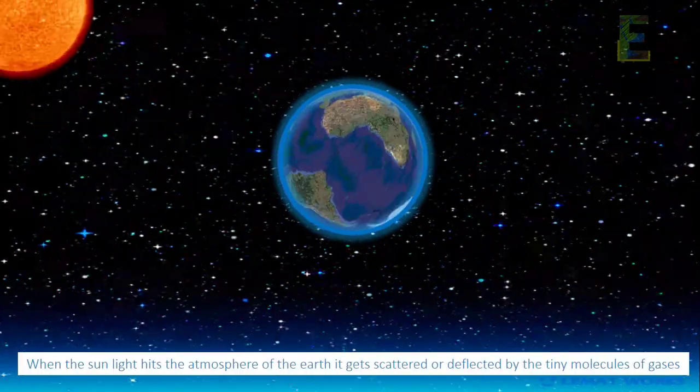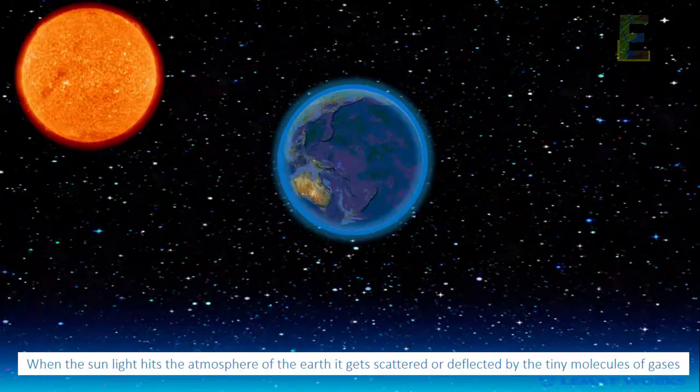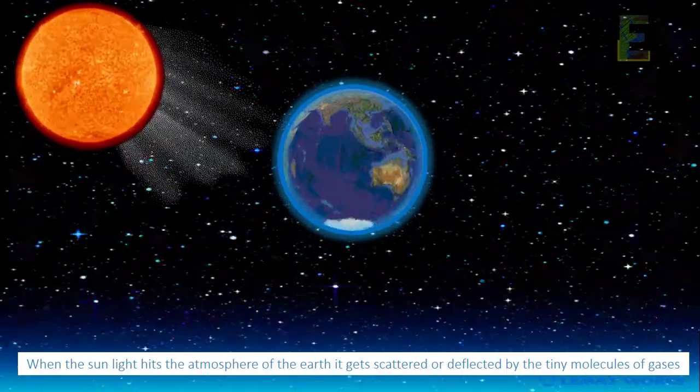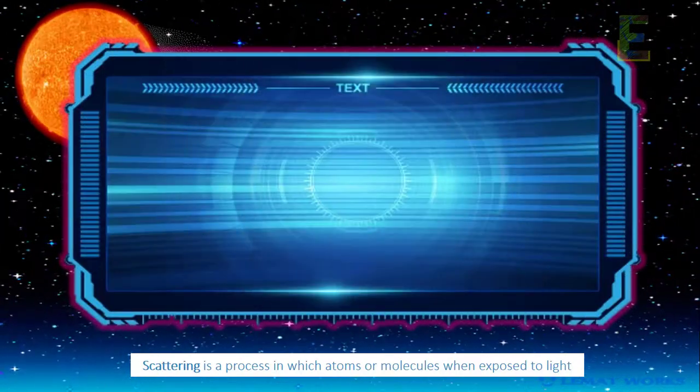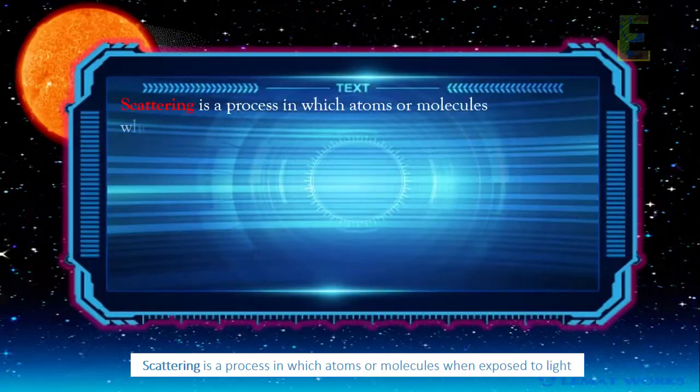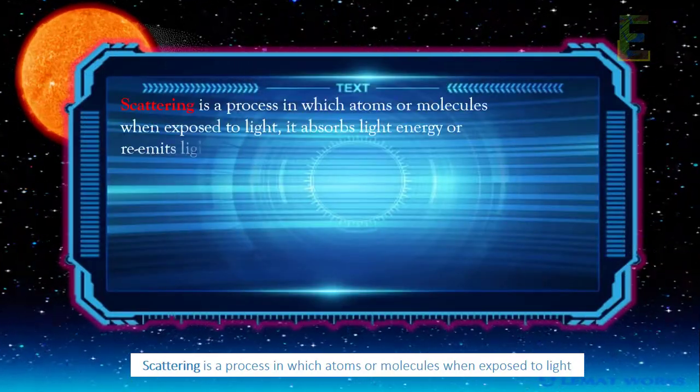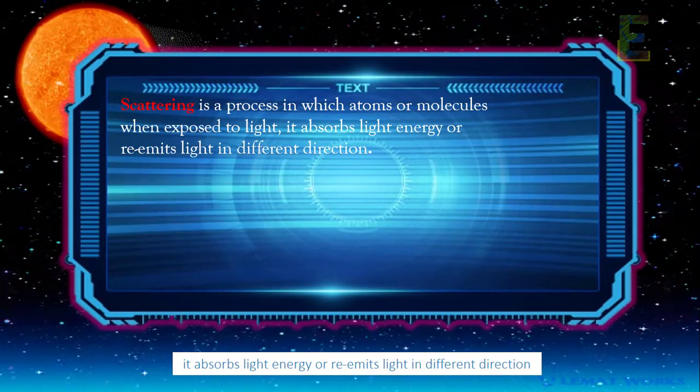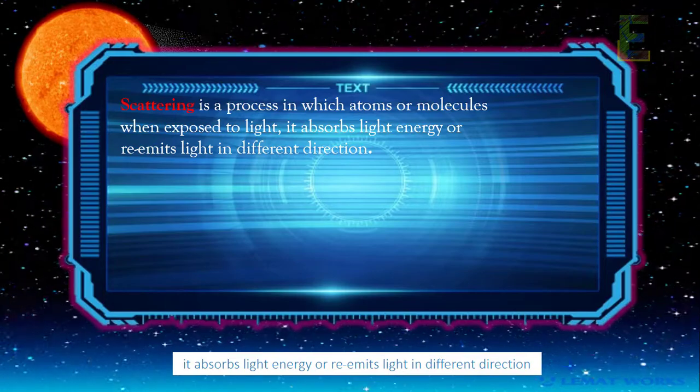When the sunlight hits the atmosphere of the Earth, it gets scattered or deflected by tiny molecules of gases. Scattering is a process in which atoms or molecules, when exposed to light, absorb light energy or reemit light in different directions.